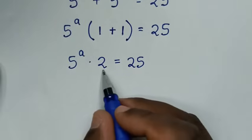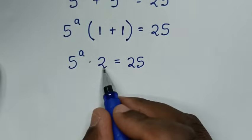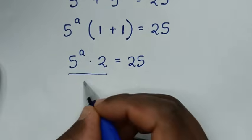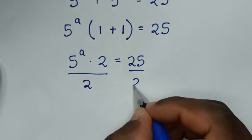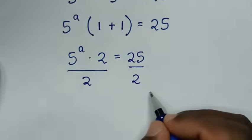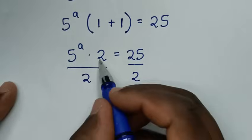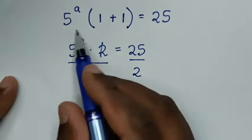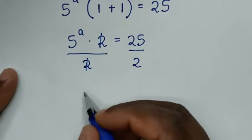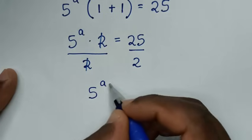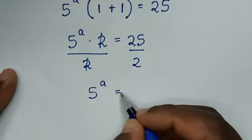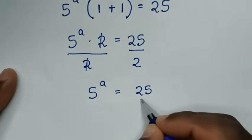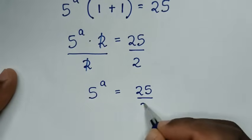Then we divide by 2 on both sides. This 2 and this 2 will cancel, so it will be 5 power a is equal to 25 over 2.